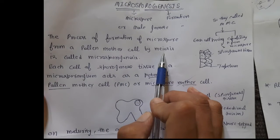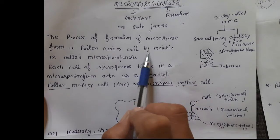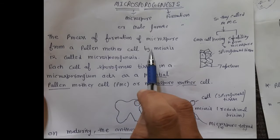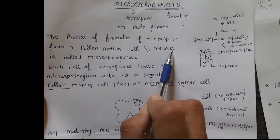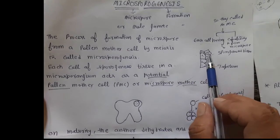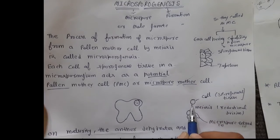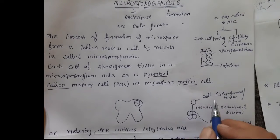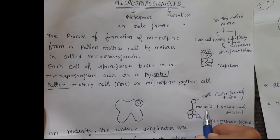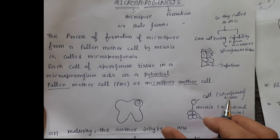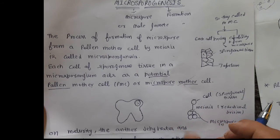Meiosis and mitosis — we have already discussed these. Meiosis is reductional division, and mitosis is equational division. In our body, we have a single cell — a zygote — that divides by mitosis, and the body grows. In mitosis the chromosome number stays equal, that is why it is called equational division.